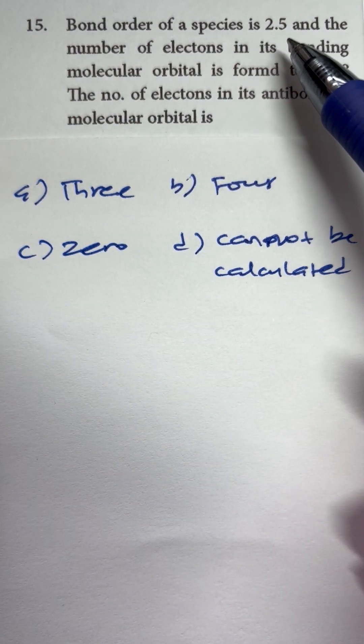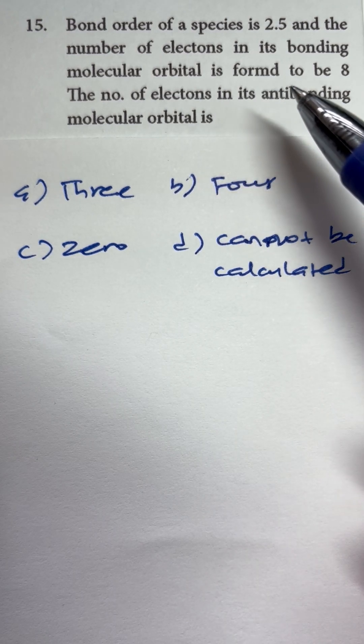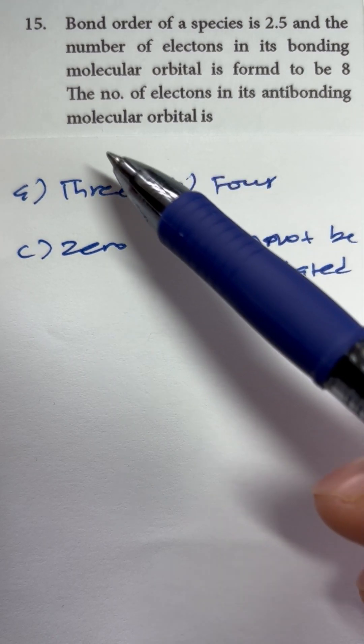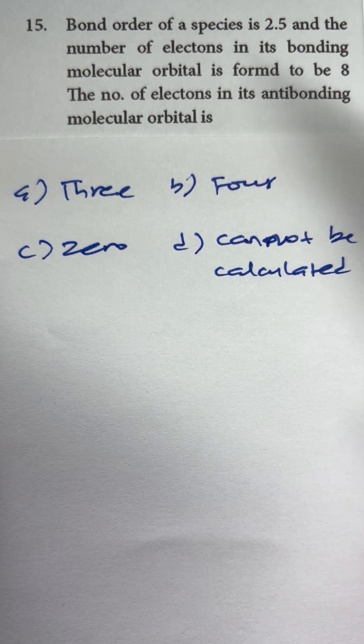The bond order of a species is 2.5 and the number of electrons in its bonding molecular orbital is found to be 8. If that's the case, what would be the number of electrons in its antibonding molecular orbital?